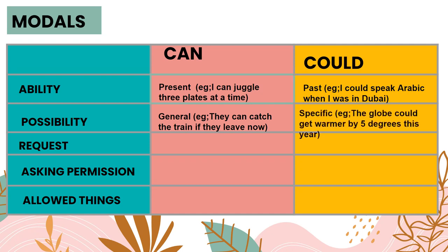Could is used to express possibility for specific events. For example: The globe could get warmer by five degrees this year. Here we are talking about a possibility — there is a very high chance that the globe could get warmer. We can also use can, however the more appropriate word here would be could.